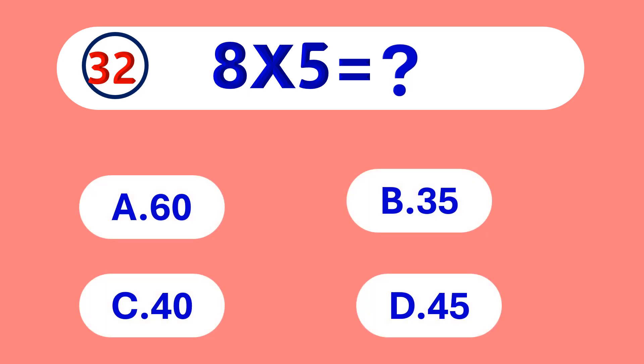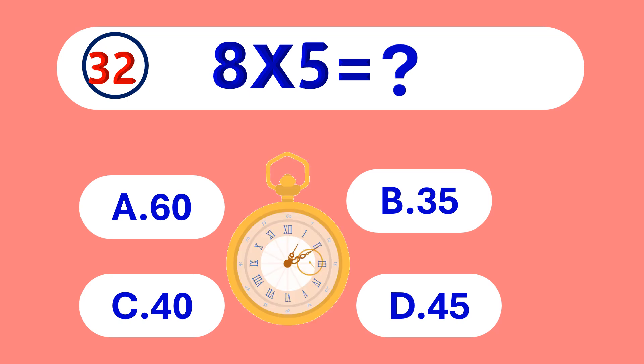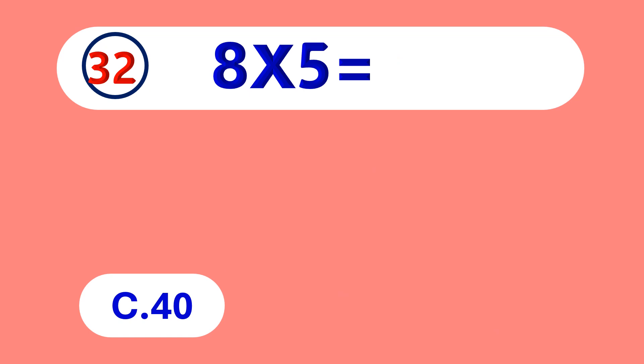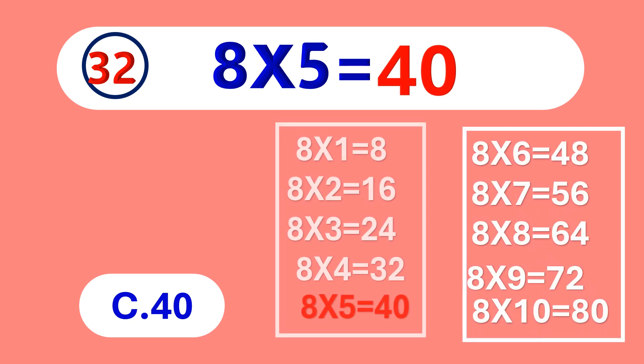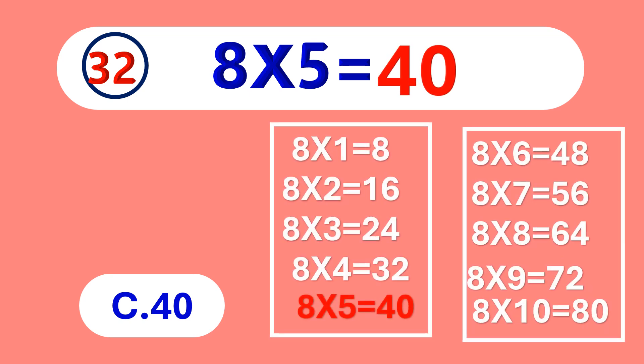8 times 5 is equal to... 40. 8 times 5 is 40.